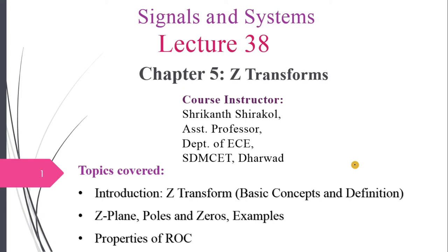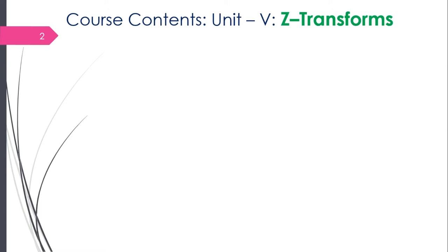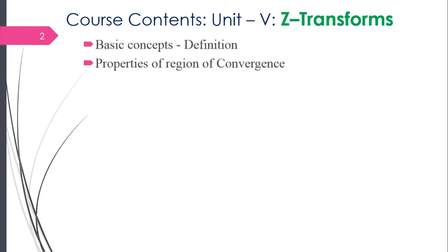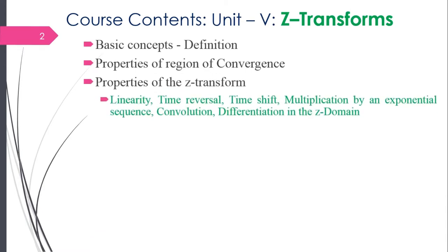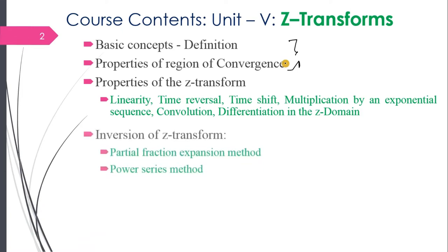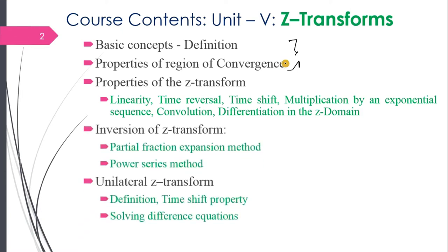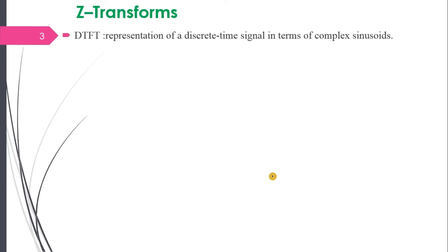We will also learn properties of ROC — Region of Convergence — and related problems. The course contents for Unit 5 go as follows: first, basic concepts, then the Z plane, then properties of Region of Convergence. These first two topics are covered today. In the next session, we cover properties of Z transforms, inversion of Z transform, unilateral Z transform, transfer function, and the relationship between Z transforms and DTFT.